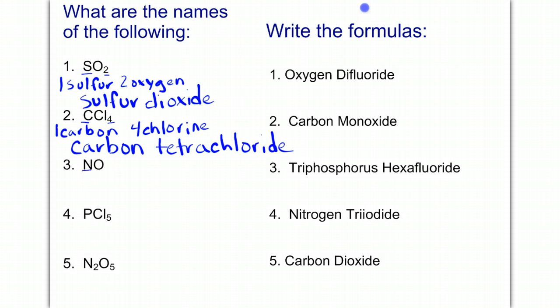In number three, we have one nitrogen, and we have one oxygen. And so that will be called nitrogen monoxide. And notice I didn't put monoxide. I dropped one of the O's.